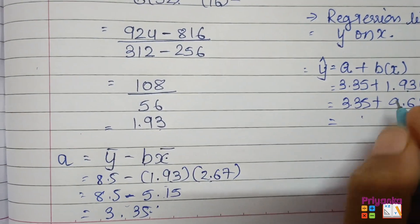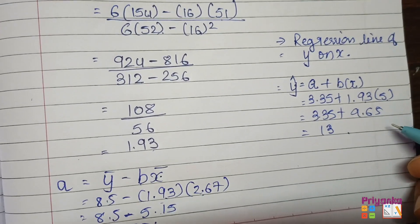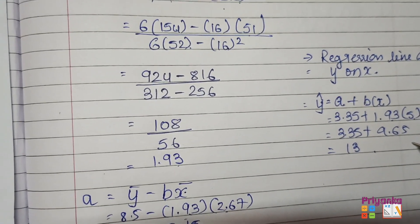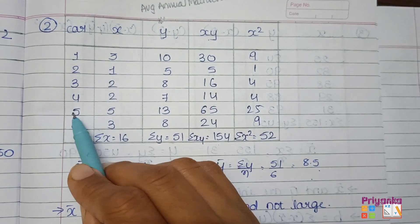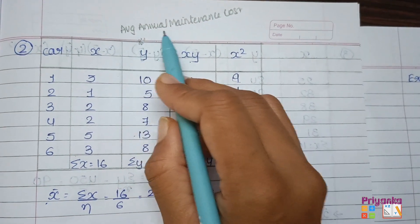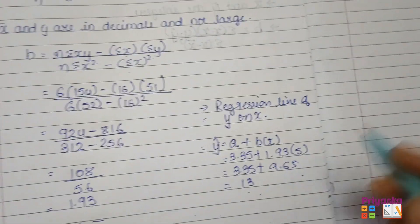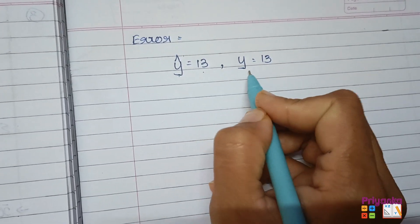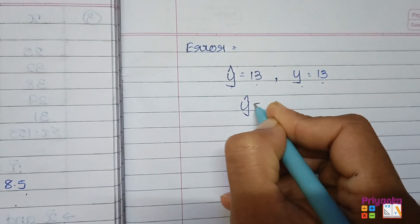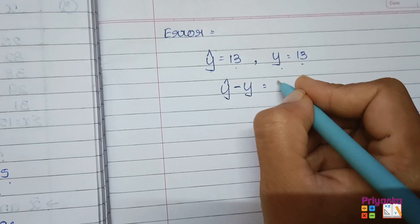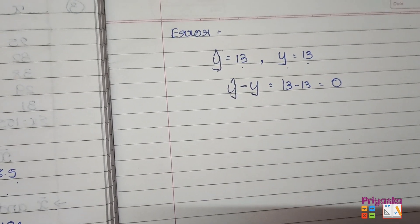Hence the estimated average annual maintenance cost obtained is 13. To find the error, go to the 5-years row where the actual y given in the question is also 13, and ŷ = 13. Error = ŷ − y = 13 − 13 = 0. Hence the point lies exactly on the fitted regression line.